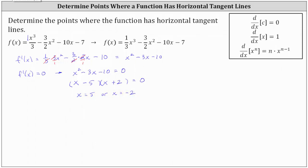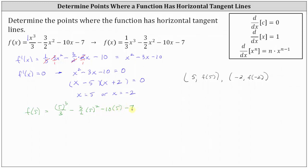We now know the x-coordinates for the points where the function has horizontal tangent lines: one x-coordinate is 5 with corresponding y-coordinate f(5), and the second point has x-coordinate negative 2 with y-coordinate f(negative 2). Be careful to substitute these x-values back into the original function, not the derivative. So f(5) equals 5 cubed divided by 3, minus (3/2) times 5 squared, minus 10 times 5, minus 7. And f(negative 2) equals (negative 2) cubed divided by 3, minus (3/2) times (negative 2) squared, minus 10 times negative 2, minus 7.